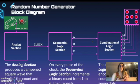You've already built the analog section and that clock signal that comes out on the analog section is what goes into our sequential logic section. That sequential logic section, on every pulse of the clock, increments a binary count from one to six and then it repeats. That then goes into the combinational logic section which encodes the binary count into a seven segment display.